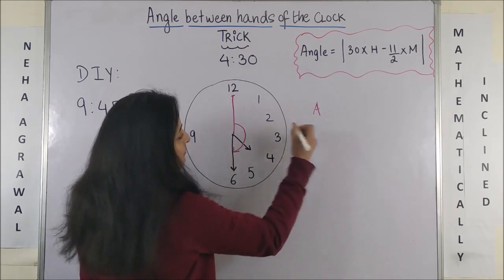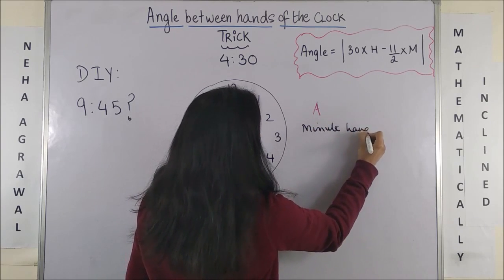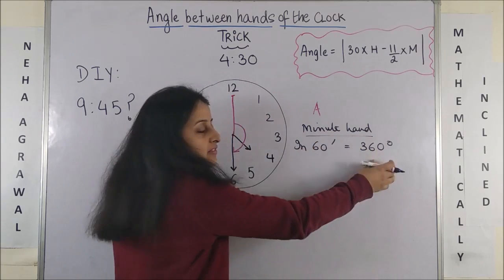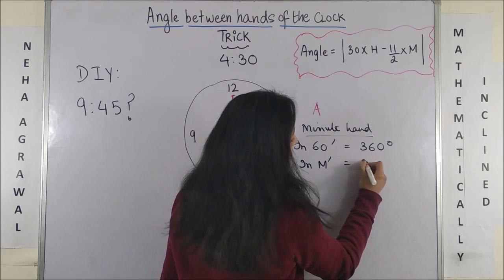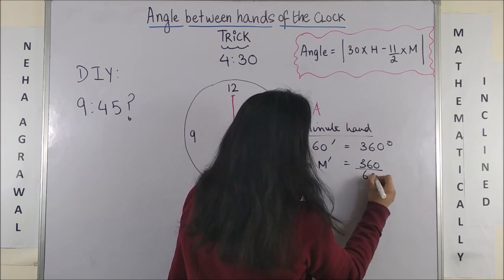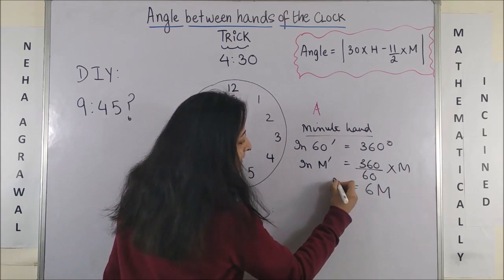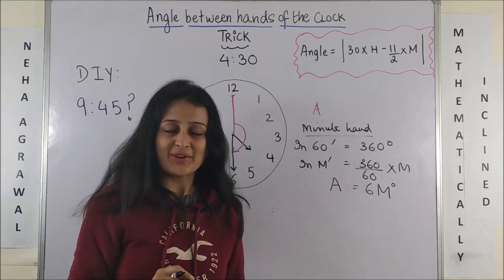So I need to get my angle A first. So for this, if I am talking of minute, for the minute hand, we all know the minute hand in 60 minutes covers 360 degrees. So in some M minutes, it will cover 360 by 60 into M which makes it 6M. So I can call this angle as angle A which is 6M degrees.